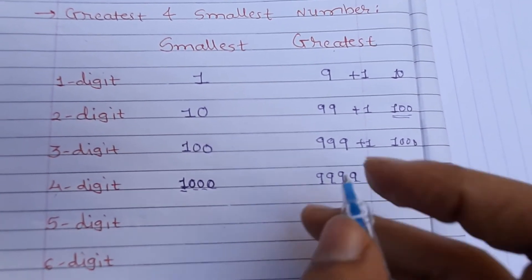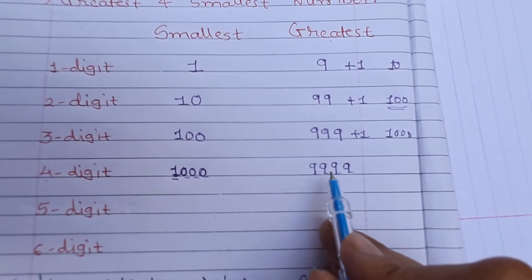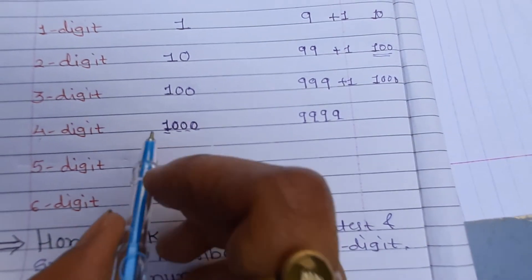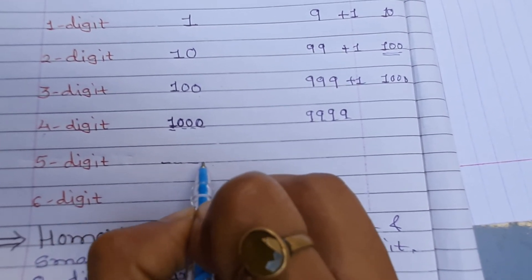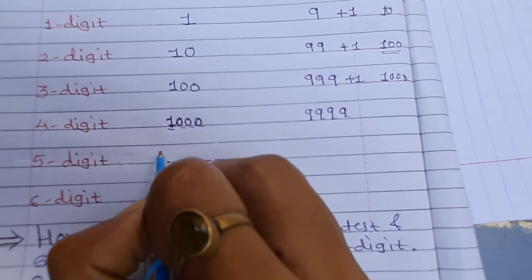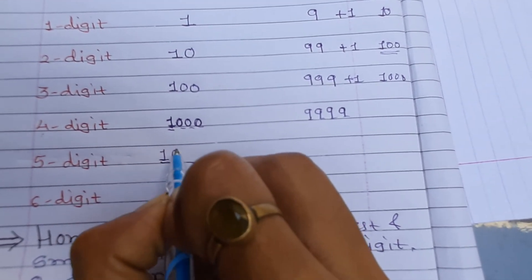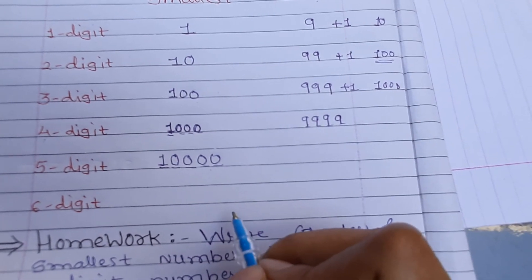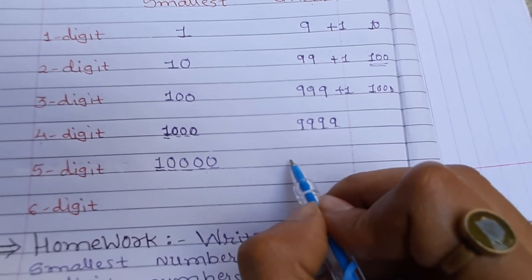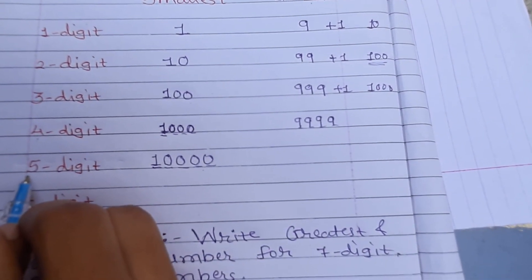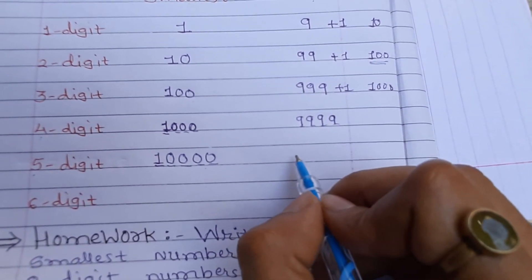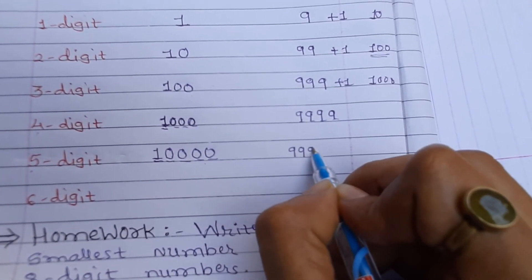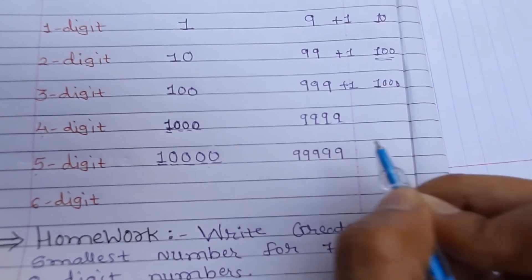Same way, if I want to write the smallest 5-digit number, the first digit is 1 then followed by other zeros, so the number becomes 10000. For the greatest 5-digit number, I write 9 five times: 9 9 9 9 9, giving 99999.